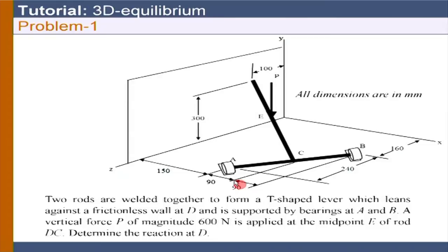The problem involves two rods. Let us say this point is D, so CD and AB — two rods are welded together — and it is leaning against a frictionless wall at D. A vertical force P of magnitude 600 Newton is applied at the midpoint E.